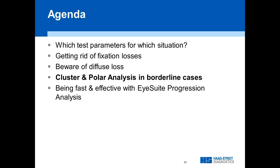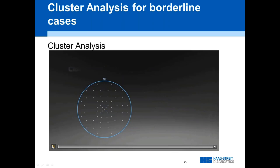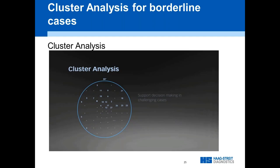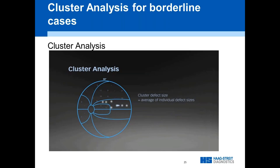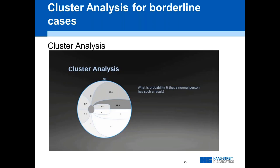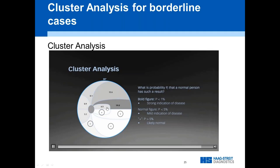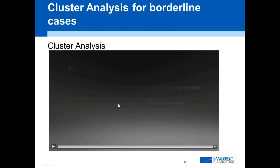Moving on to more recent tools in the Octopus iSuite software — the polar and cluster analysis — which are really nice tools for early borderline glaucoma cases. The cluster analysis starts with the comparisons chart, looks at the defects, then makes 10 retinal nerve fiber bundle clusters based on anatomy and takes an average within each cluster. We use a probability representation to determine if there is a statistically significant change. In the latest version, abnormal clusters are shown in red and orange, with a plus sign for normal clusters.